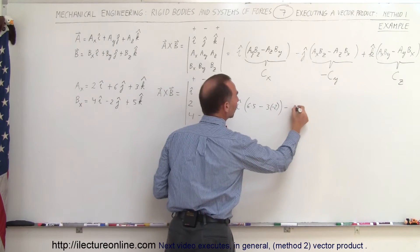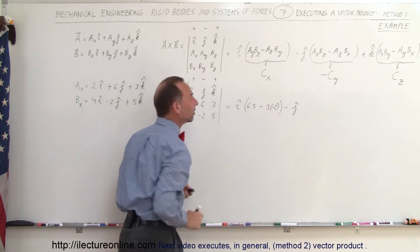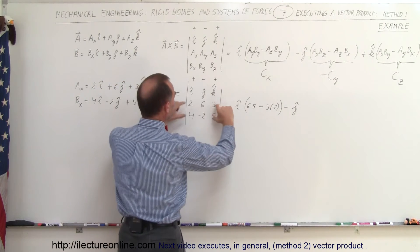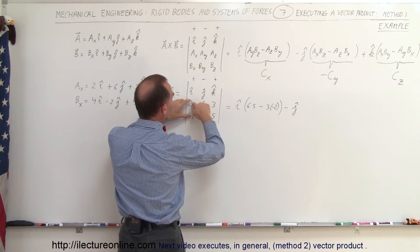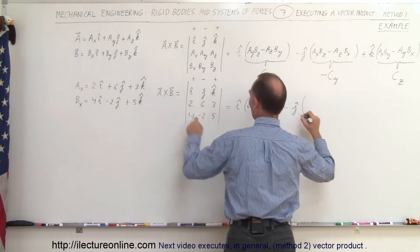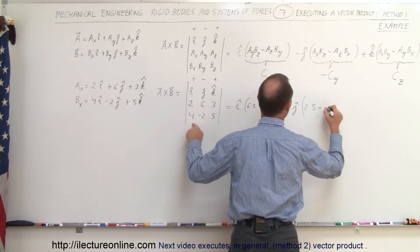Now we write minus J. The reason we write minus is because we alternate signs. So this becomes minus J. Then again we cover up this column, this row, we end up with those four elements. We multiply those two together and subtract, we multiply those two together. So this becomes 2 times 5 minus 3 times 4.